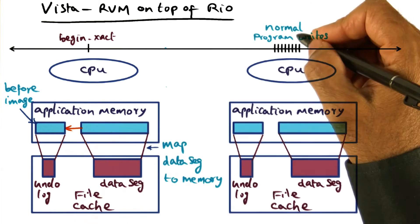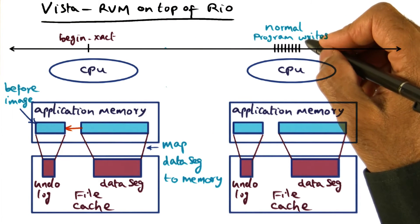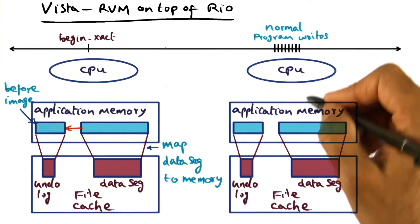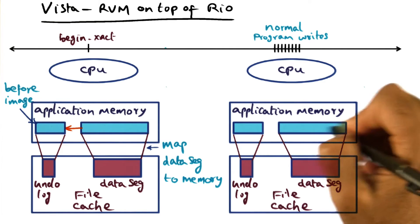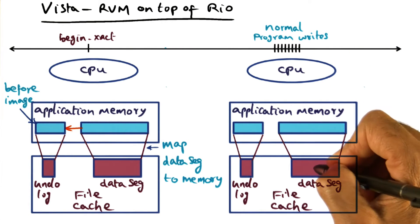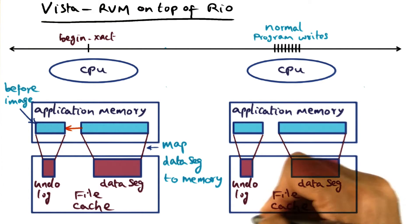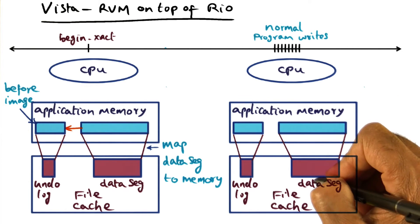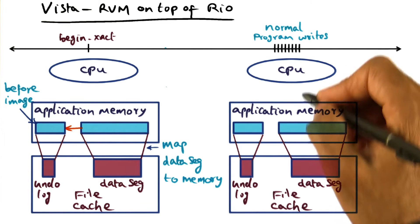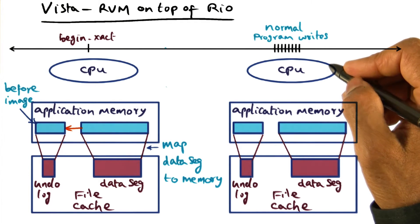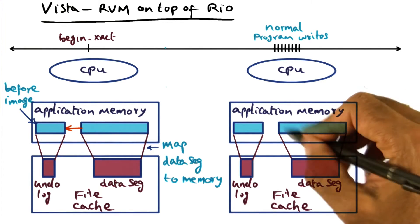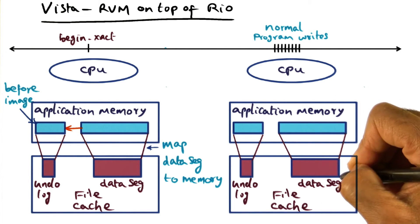When the program executes the body of the transaction, it's doing normal program writes to the portion of the virtual address space where it has persistent data structures. The portion of the virtual memory mapped to the external data segment is persistent by definition. So these normal program writes actually get into the data segment automatically, because this portion of the virtual address space is mapped to the data segment which is in the file cache and therefore persistent because of the battery backing. All changes made during execution of the transaction body are persisted in the original data segment, since the in-memory copy is sitting in the battery-backed file cache.